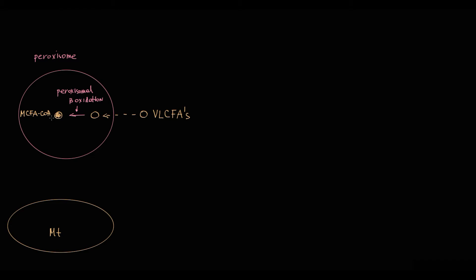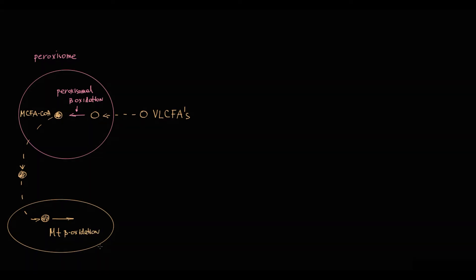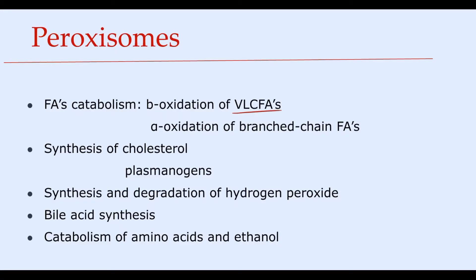Medium-chain length fatty acyl-CoA is then delivered to mitochondria, where it can undergo mitochondrial beta-oxidation. Also, peroxisomes are the only organelle that can provide alpha-oxidation of branched-chain fatty acids.